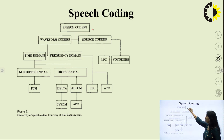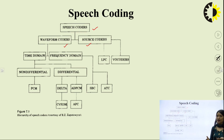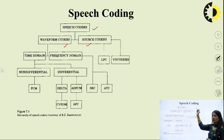Speech coders are classified as waveform coders and source coders. Vocoder is actually a form of encoder used to code the speech signal. In mobile and wireless communication, the main objective is to transmit data, which can be voice or any other data. Voice signal can be transferred once it is coded, because in digital communication, speech should be converted into encoded form of bits. Vocoders convert speech into encoded bits. For that we have waveform coders and source coders.